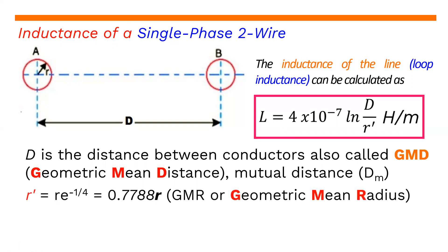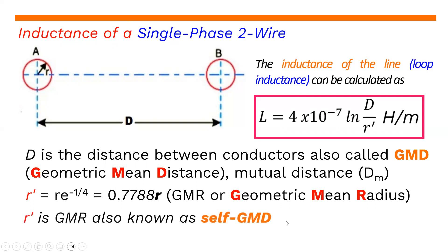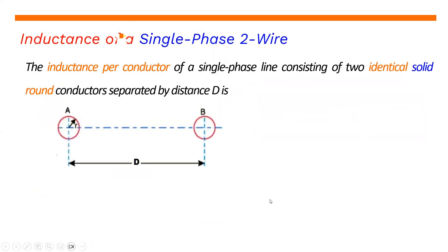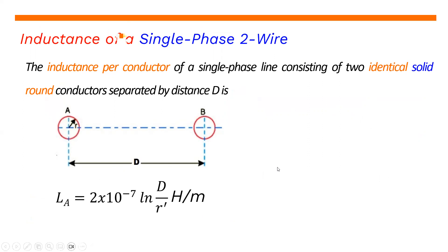Where R prime is equal to R times e raised to negative one-fourth, or simply equals to 0.7788R. That is the GMR, or the geometric mean radius. Where R prime is the GMR, also known as self-GMD in some books. Where R is the radius of the conductor. So the inductance per conductor of a single-phase line consisting of two identical solid round conductors, separated by distance D, is simply L sub A is equal to 2 times 10 to the negative 7 ln of D over R prime, Henry per meter.